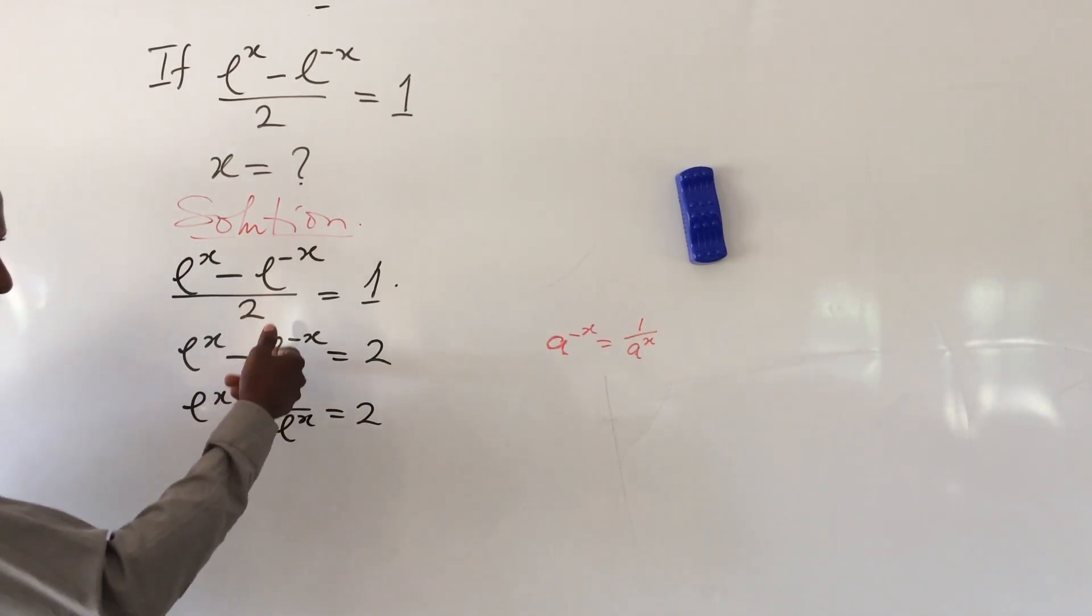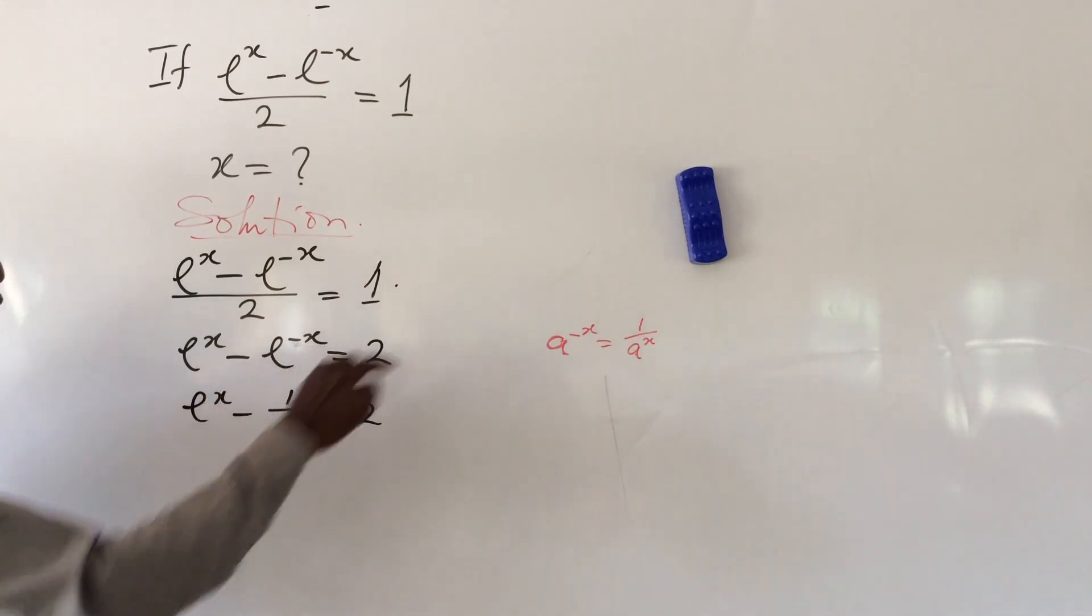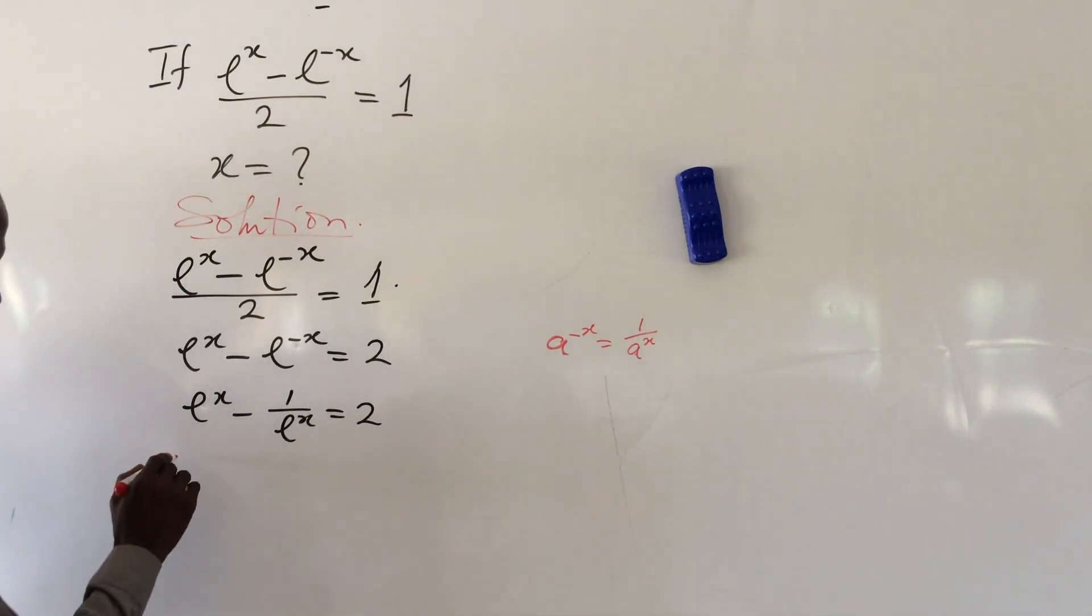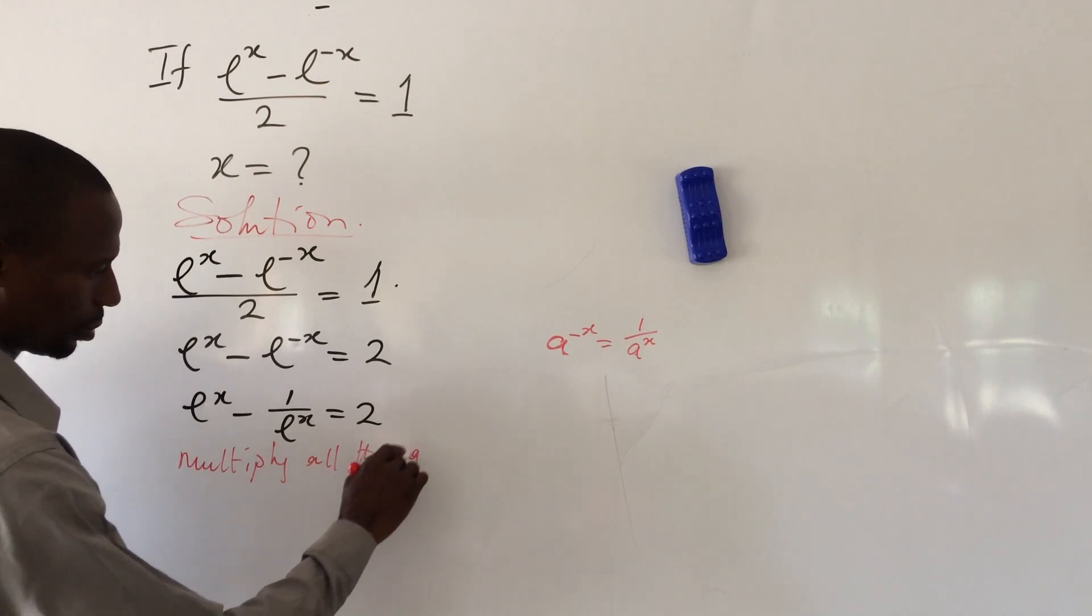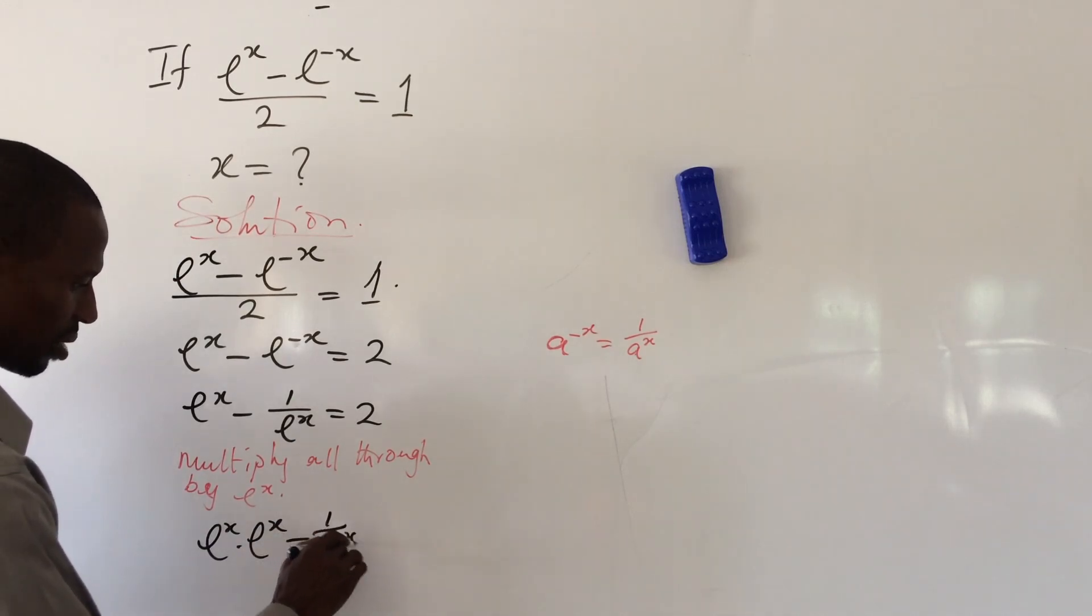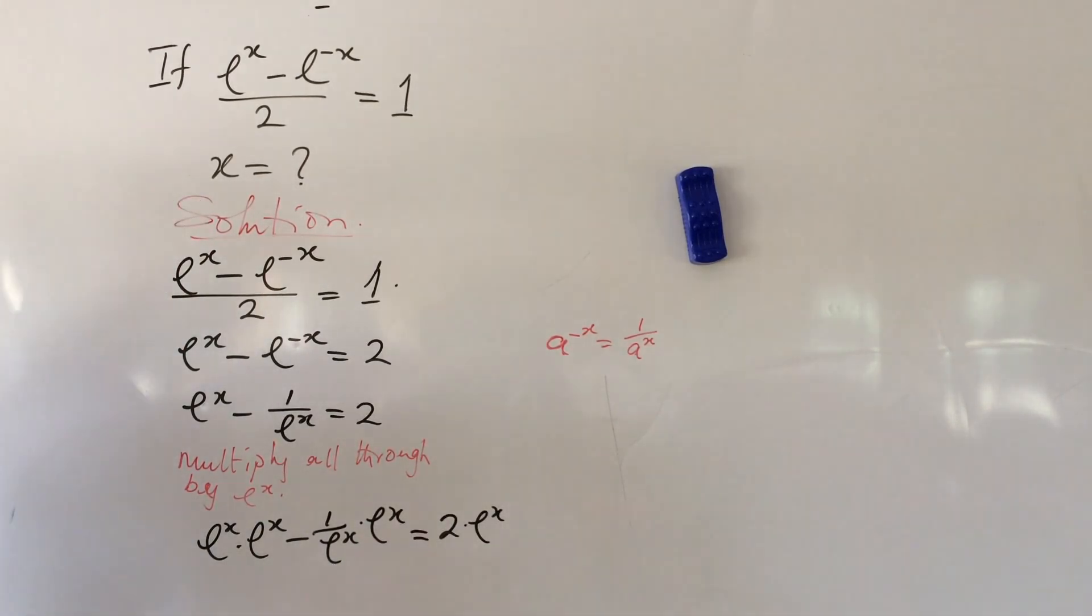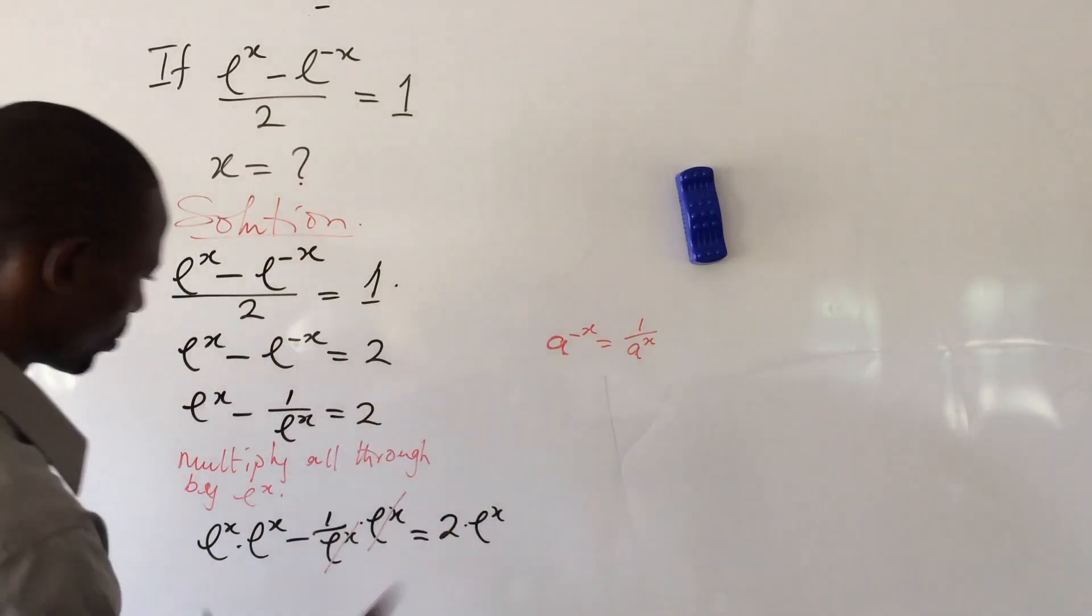When we have a denominator in the first stage, we multiply through. Here, let's multiply through by e^x to eliminate this denominator. This gives us e^x · e^x - 1/e^x · e^x = 2 · e^x.